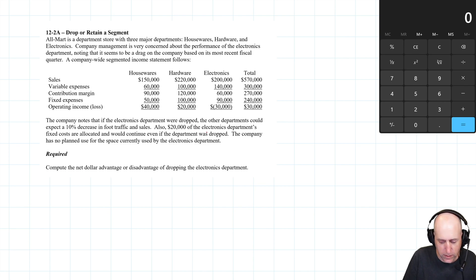Also, $20,000 of the electronics department's fixed costs are allocated and will continue even if the department was dropped. So even if we get rid of electronics, some of those fixed costs stay. Some might be management costs where the salaried manager operates across departments, or it could be property tax on the building. Maybe we're still in the same building while our property taxes remain.